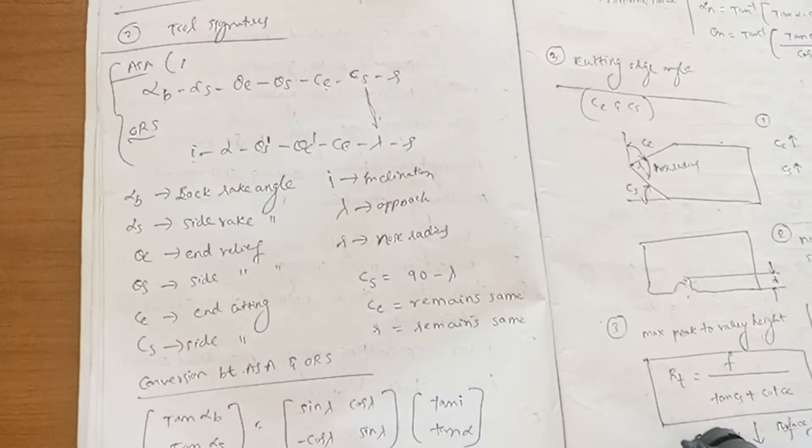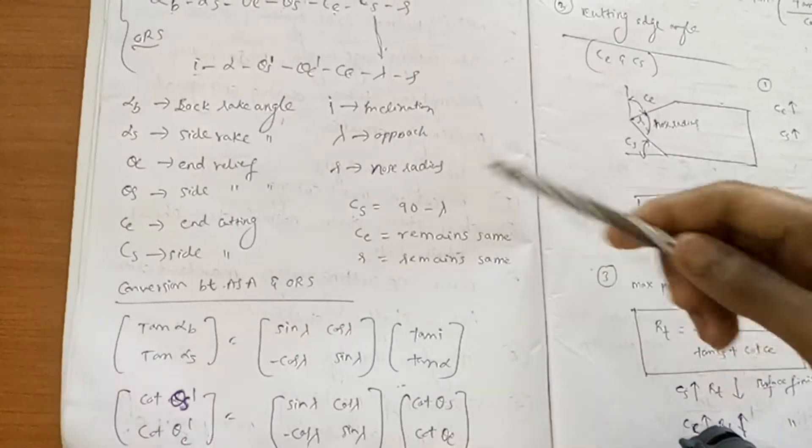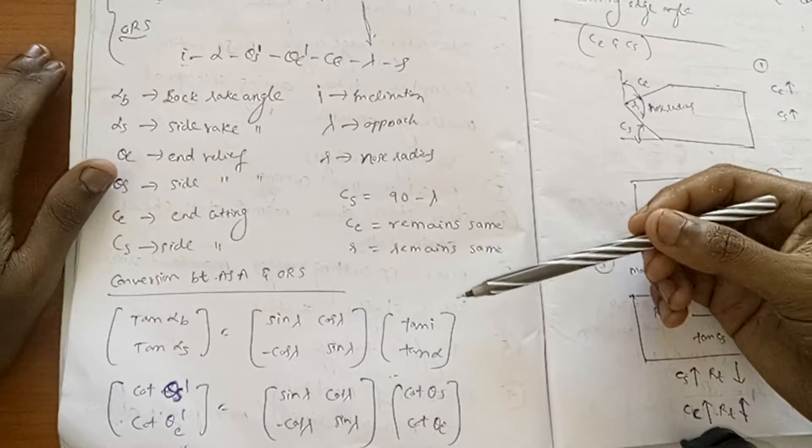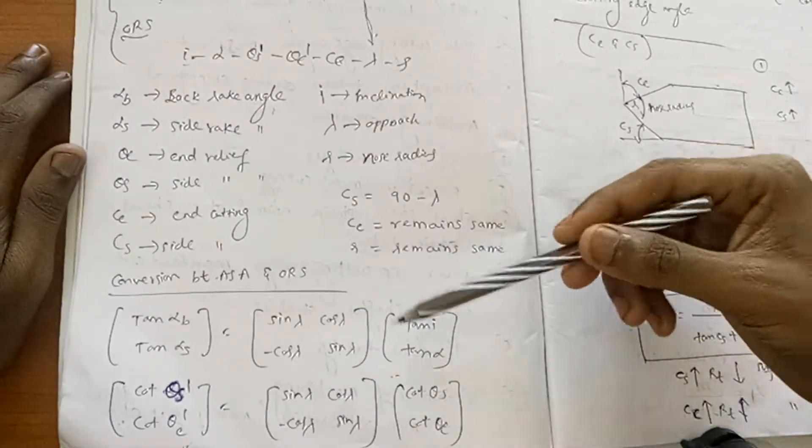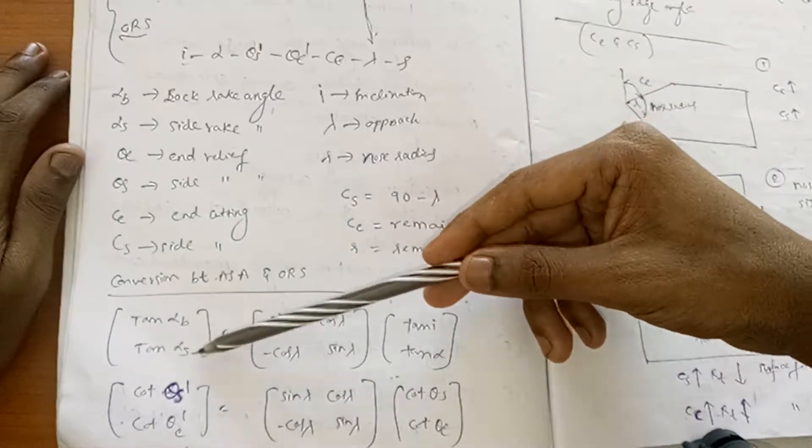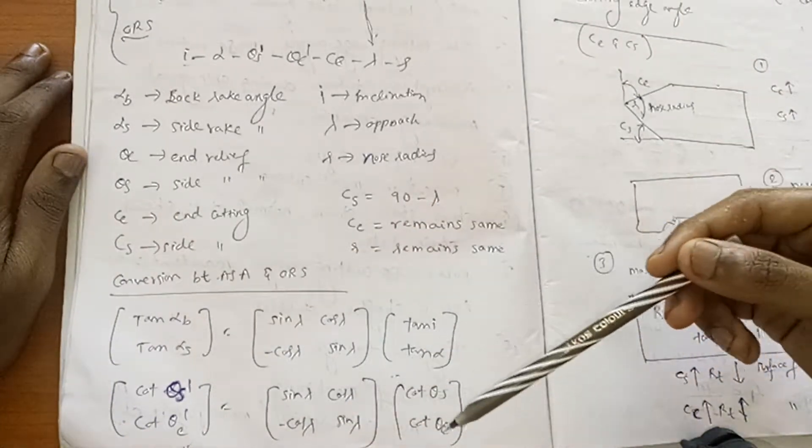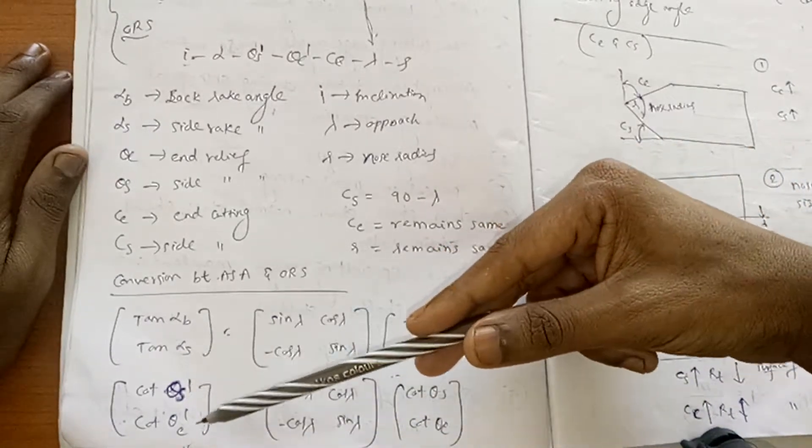If you want to have conversion between ASA and ORS, these are the two formulas. In the question, if inclination and effective rake angle and lambda are given, you can easily find out alpha_B, alpha_S. The same with this formula also. If three angles are given, you can easily find out theta_S dash, theta_E dash.